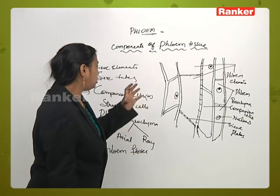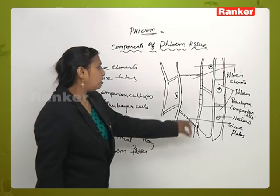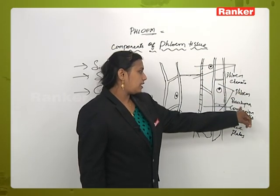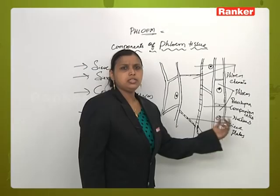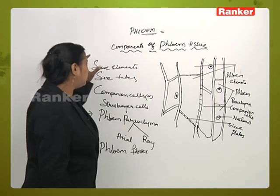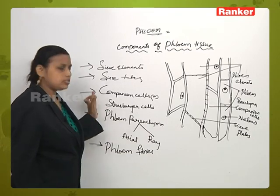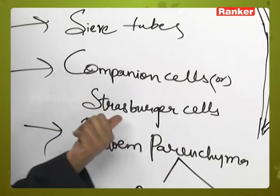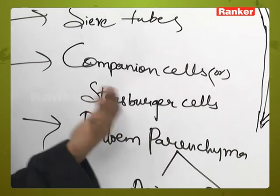Before going into detail, this is the diagram of the phloem tissue, where you will see the phloem elements, phloem parenchyma, companion cells, nucleus, and the sieve plates. The different components of the phloem elements are sieve elements, sieve tubes, and companion cells — which are also called Strasburger cells, because the anatomist Strasburger also identified them.